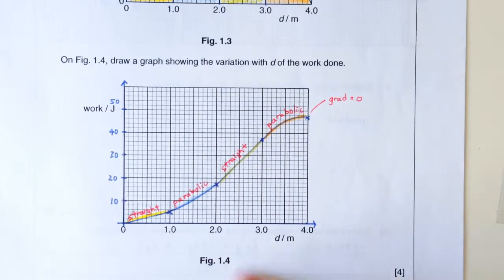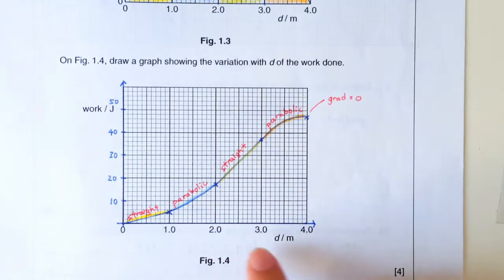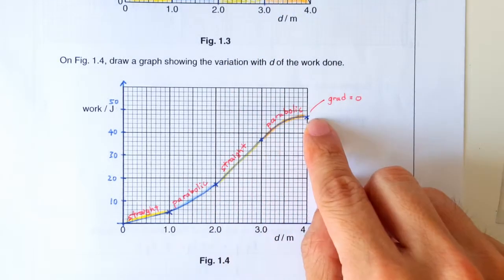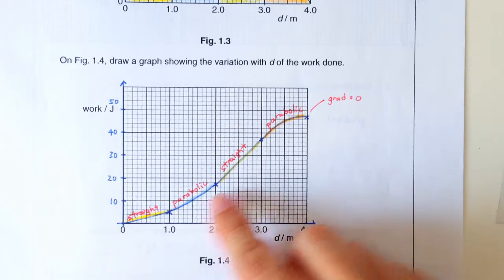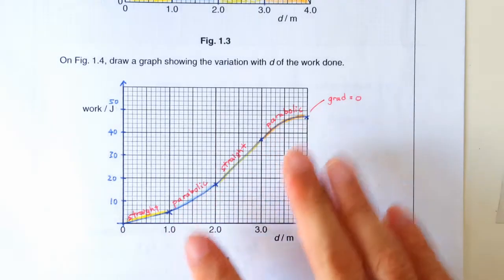Alright. So first, calculate the cumulative work done. You got the four data points. Work out which should be the straight line segments and which should be the curves.